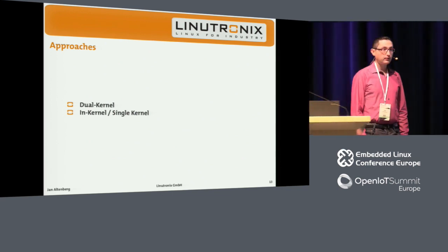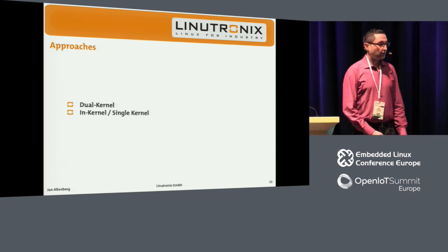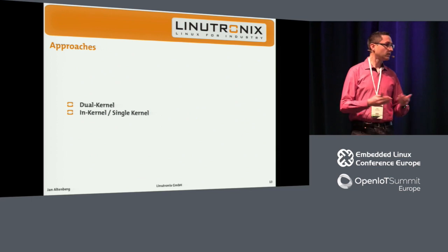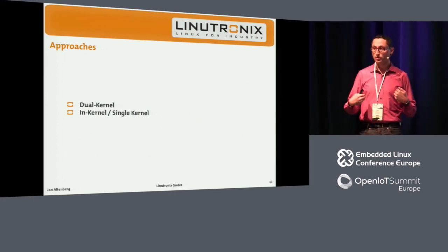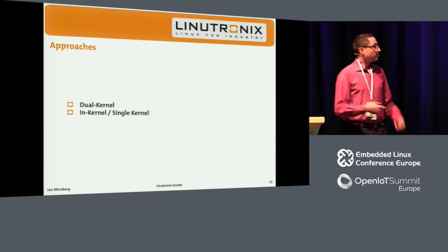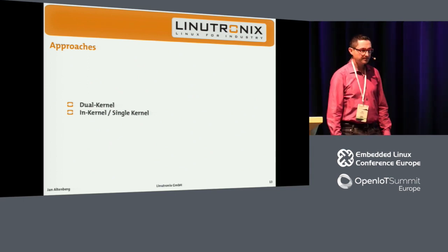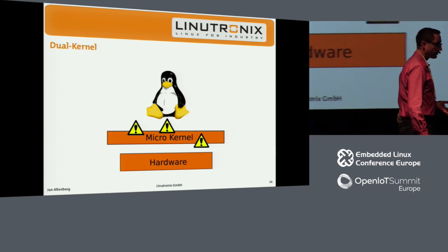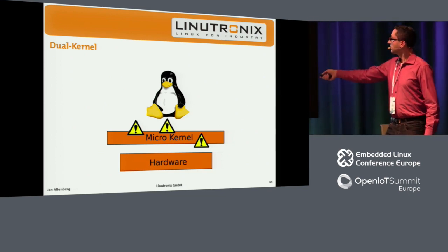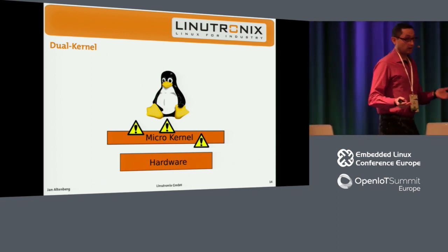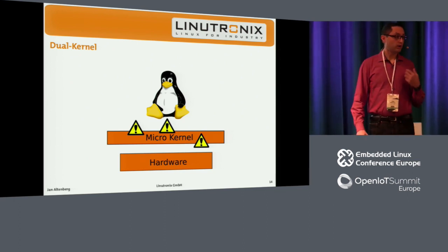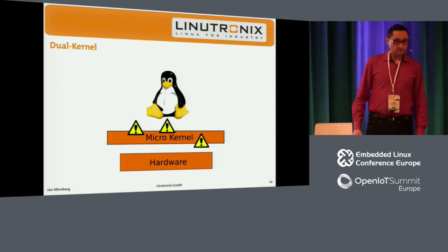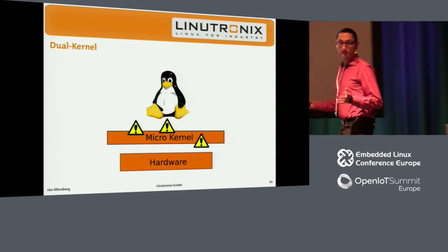Traditionally, we have two approaches to make Linux real-time capable. The oldest are the dual-kernel approaches, which are basically not doing real-time in Linux — it's having real-time alongside Linux on the same system. These introduce a micro-kernel that does the real-time work, while Linux runs on top as a low-priority real-time task. If no critical real-time applications are running, Linux gets some runtime. This looks quite clever at first glance.